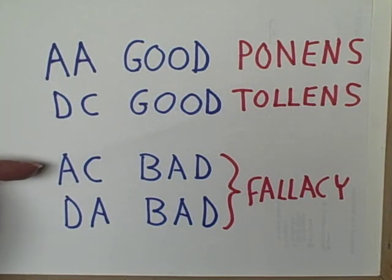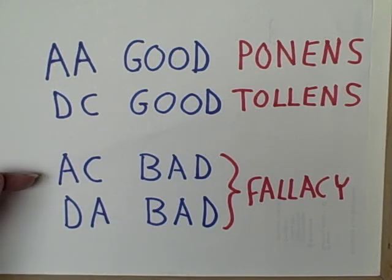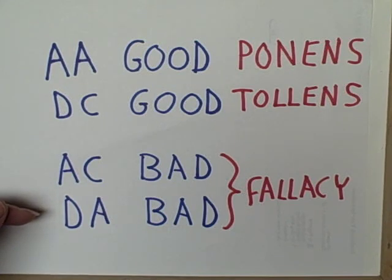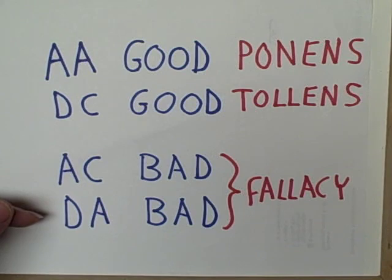Affirming the consequent and denying the antecedent are fallacies. Here's one way to remember that: if you steal an air conditioner, the District Attorney will put you in jail. AC — air conditioner. DA — District Attorney. Fallacies.